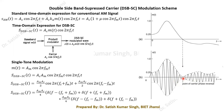This is a very basic difference between the DSBSC time domain waveform and the conventional AM time domain waveform. In conventional AM there is no phase reversal of the carrier, but in DSBSC there is a 180-degree phase reversal of the carrier whenever the message changes sign.